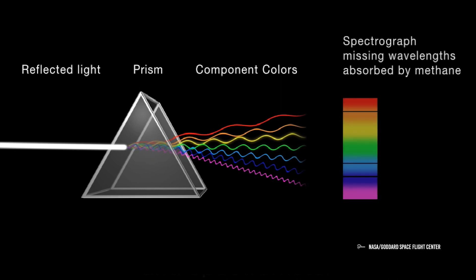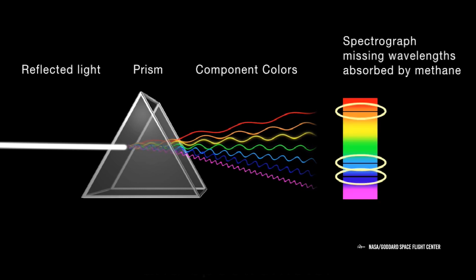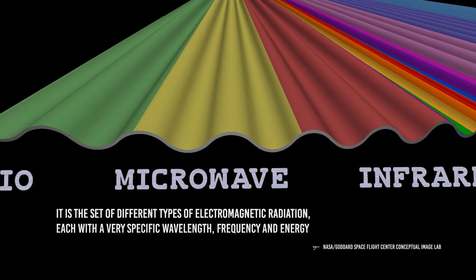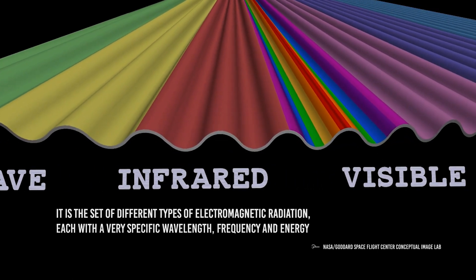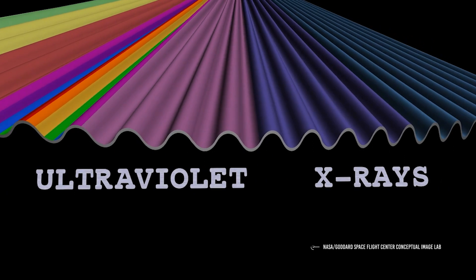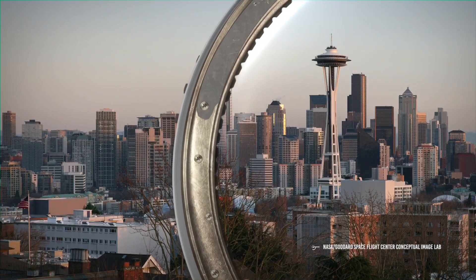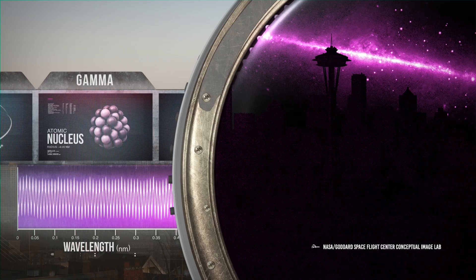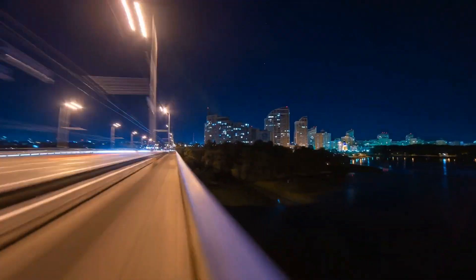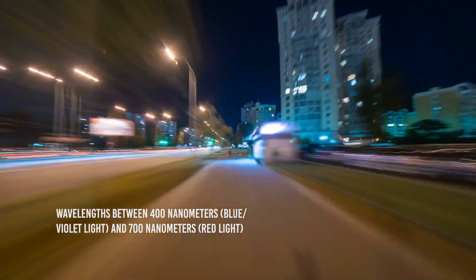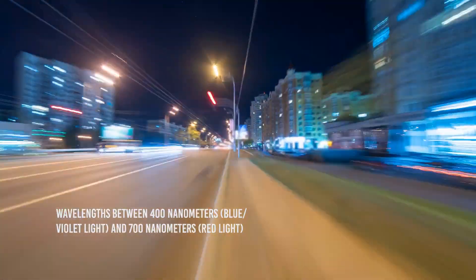In astrophysics, spectroscopy is essential to obtain information on the chemical composition and physical conditions of stars. The electromagnetic spectrum is the set of different types of electromagnetic radiation, each with a very specific wavelength, frequency and energy. It consists of radio waves, microwaves, infrared, visible light, ultraviolet, x-rays, and gamma rays. Radio waves are characterized by large wavelengths and low frequencies, while gamma rays have very small wavelengths and very high frequency. Our eyes are sensitive to only a small part of the electromagnetic spectrum: the visible band, characterized by wavelengths between 400 nanometers (blue-violet light) and 700 nanometers (red light).